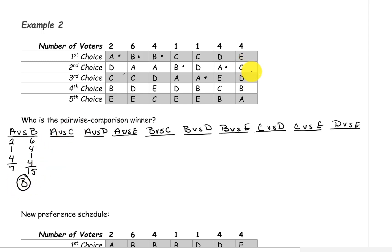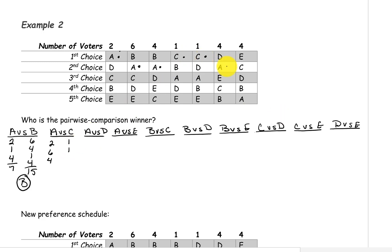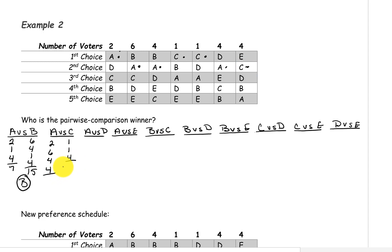Next we want to compare A and C. A is above C on the first two, on the six, and on the four. C is above A on the next one, and C is above A on the next one. A is above C on this four. And on the last four, C is above A. So A has a total of 16 votes and C has a total of six votes, so A is the winner here.